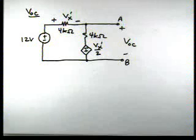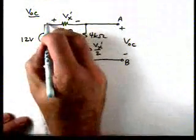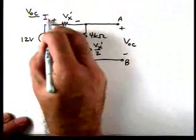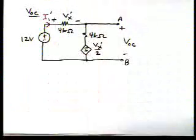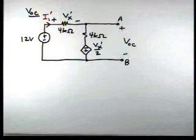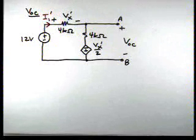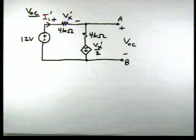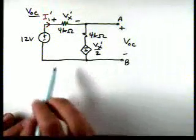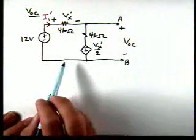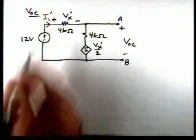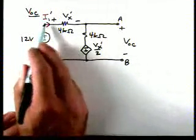And if we look at this circuit, now we really have a single-loop circuit. And remember, a single-loop circuit, we only have one current. So I'm going to define a current. I'll call it I1 prime. And I1 prime is defined to flow clockwise around that single-loop circuit.